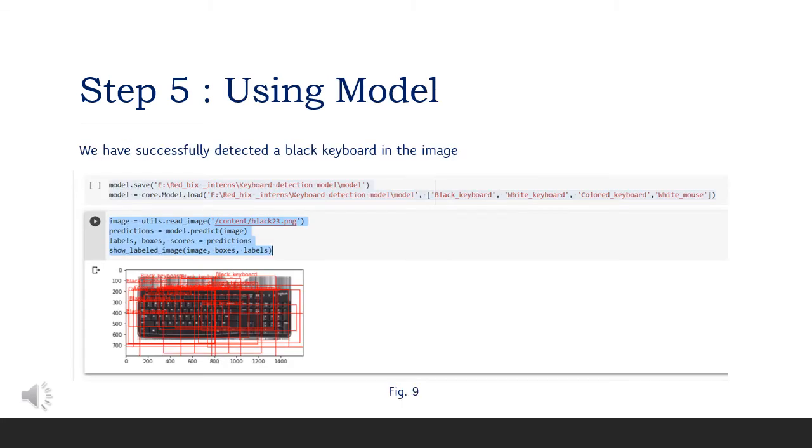Using the model is the last step. Here we have used an image with black colored keyboard and passed it to the saved model, which then predicted it correctly by showing the black colored label in red column.